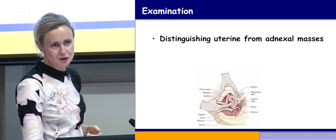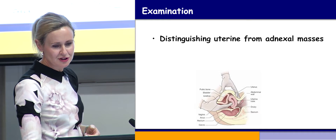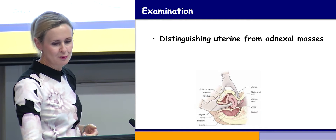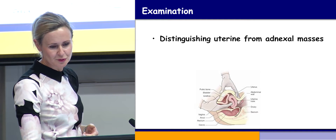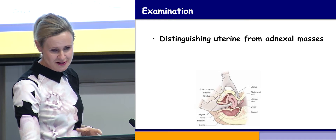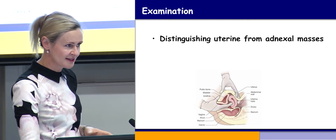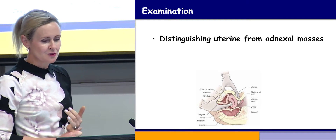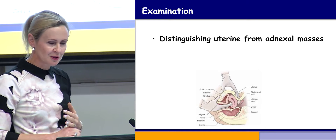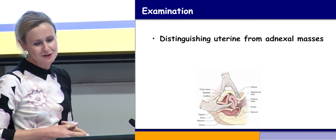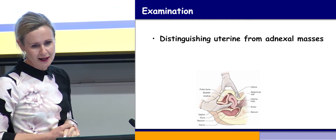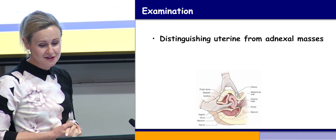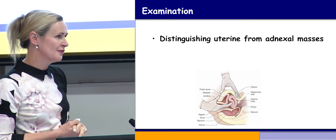In a patient with a normal BMI, you can generally distinguish between a uterine mass such as a fibroid, a benign adnexal mass, or a malignant adnexal mass. A benign adnexal mass will be soft, fluctuant, and move separate to the uterus, whereas the malignant ones will be harder and firmer, and sometimes it is harder to differentiate them from a fibroid.